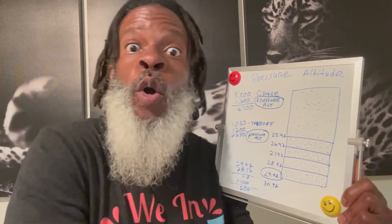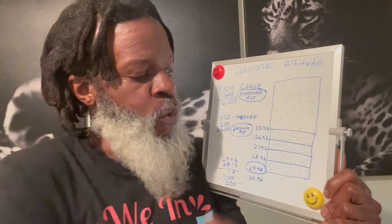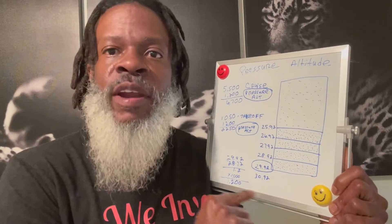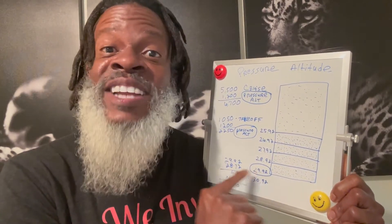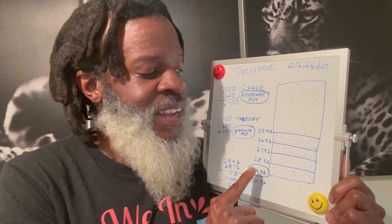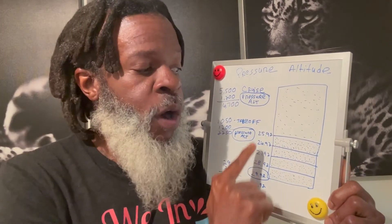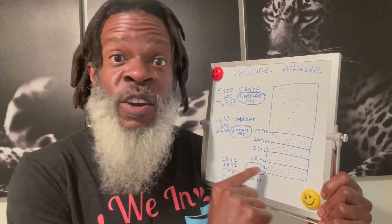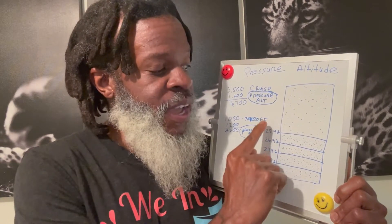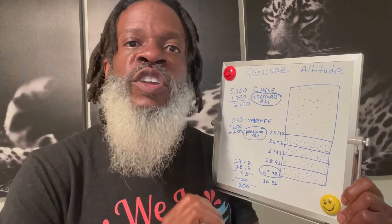And at sea level where it's 29.92, if you were to drill a hole in the ocean and measure those air molecules, the number would be going up — 30.92, 31.92, and so on. Understanding the baseline of 29.92, you're either going to go up or go down from there. Going up every 1,000 feet, you lose one inch of mercury; going down every 1,000 feet below sea level, you gain an inch of mercury. Understanding that scale relative to standard pressure helps you calibrate your pressure altitude.